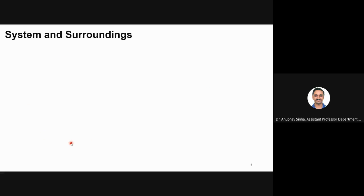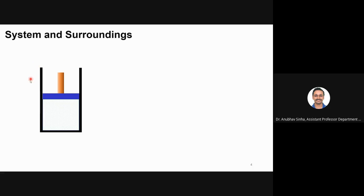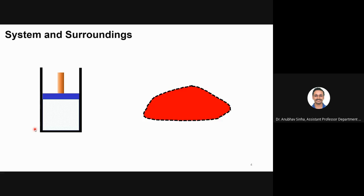We need to talk about system and surroundings — how do we define them? Looking at the piston cylinder arrangement, can we call this a system? Actually, both a piston-cylinder and any arbitrary volume in a room or in a pipe can be called a system. Both are systems. The shape doesn't matter — you can take any arbitrary shape and that will be defined as a system.